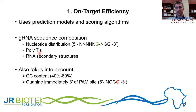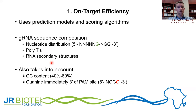Also, polyTs — or multiple thymines in a row — can trigger a termination of transcription when transcription is occurring using an RNA Pol III polymerase. If you have a premature transcription termination, this can cause a truncated guide RNA, which will result in lack of recognition.